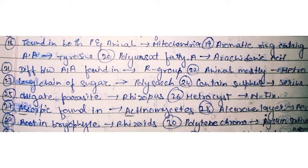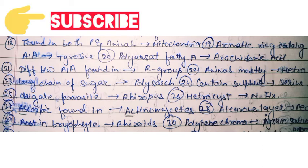Ascorbic acid is found in actinomycetes — if asked where ascorbic acid is found, the answer is actinomycetes. The next point is the aleurone layer — where is the aleurone layer present?